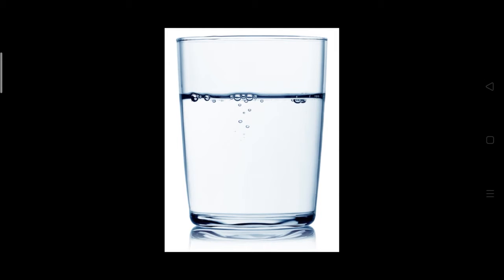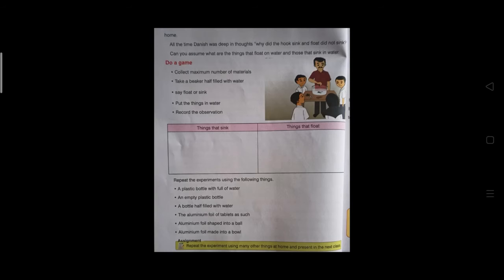Take a glass half filled with water. Before dropping things in the water, you need to guess — for example, before dropping a stone, guess whether it will sink or float. After guessing, check whether your guess is correct. Then carefully drop the stone in the water. Record your observation in textbook page 126. There is a table given: things that sink in the water and things that float on the water.